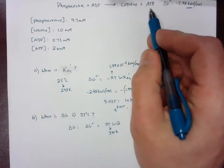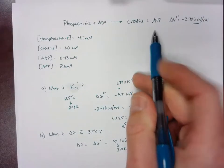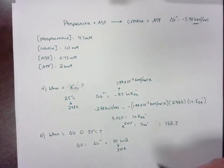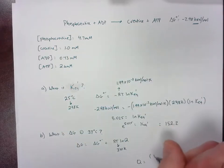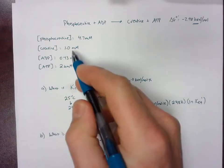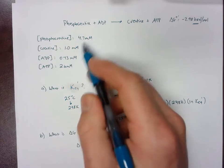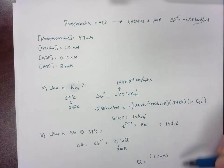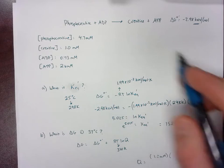Our products are going to be creatine and ATP. And so those are going to go in the numerator, and then phosphocreatine and ADP is going to go in the denominator. We have one millimolar. In this case, we don't have to convert these to molar because we have four of them. So the concentrations are actually going to cancel out. If there was an unequal number on the top and the bottom, like say if you had one on the bottom and two on the top, for example, or vice versa, you would need to convert to molar because the units would not cancel out in that case.